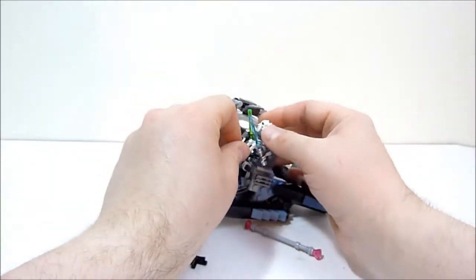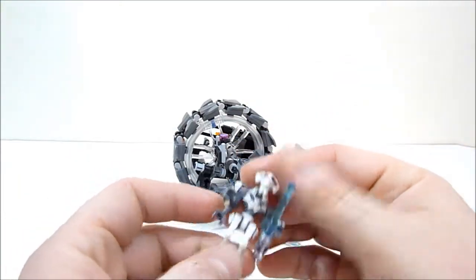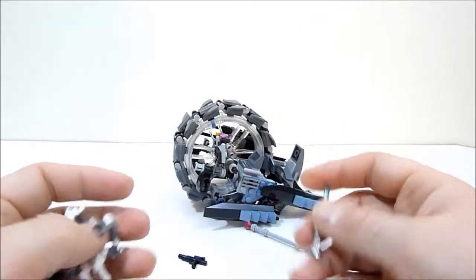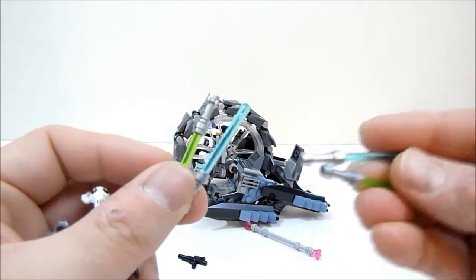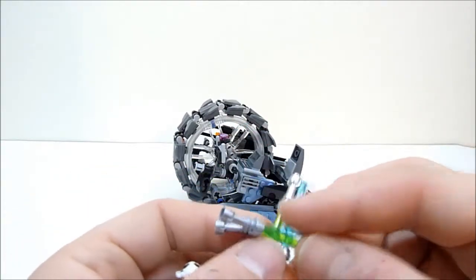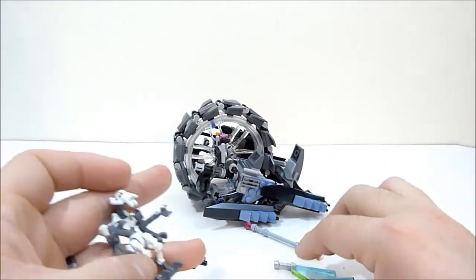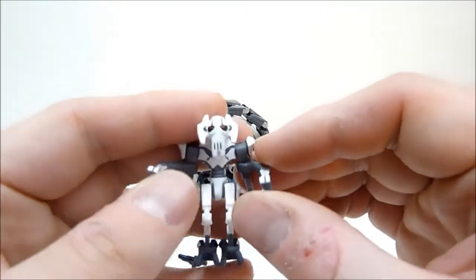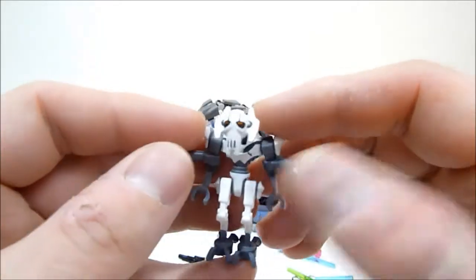And then we'll move right on to the other minifigure in this set. General Grievous. And here he is. He's got some lightsabers. He comes with four lightsabers. Two green and two blue. The kind of weird thing is, Obi-Wan does not come with any in this set. Which is kind of a bummer. I mean, I guess four in one set they figured is enough. But still, Obi-Wan needs a lightsaber.